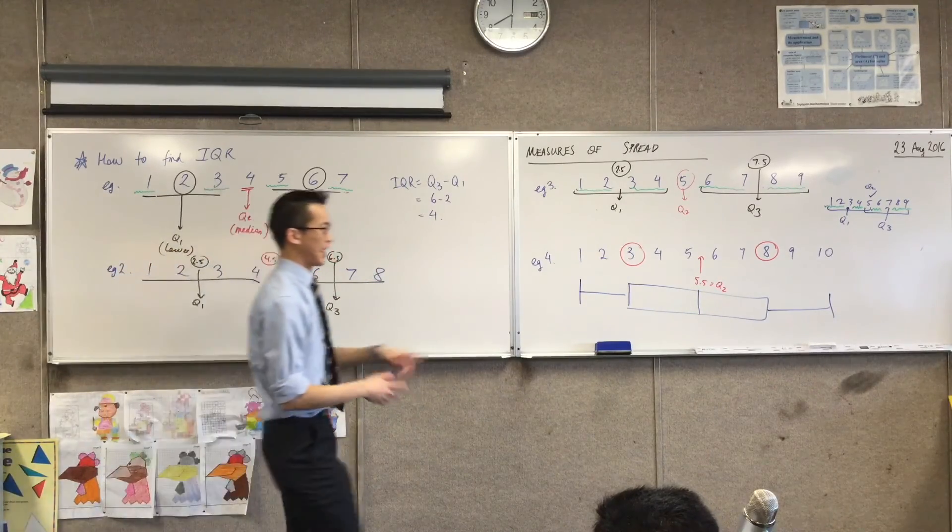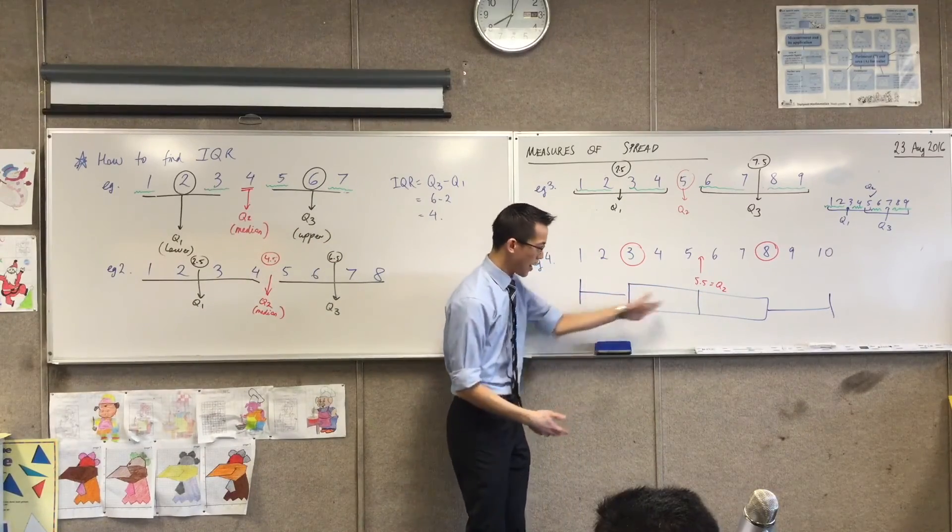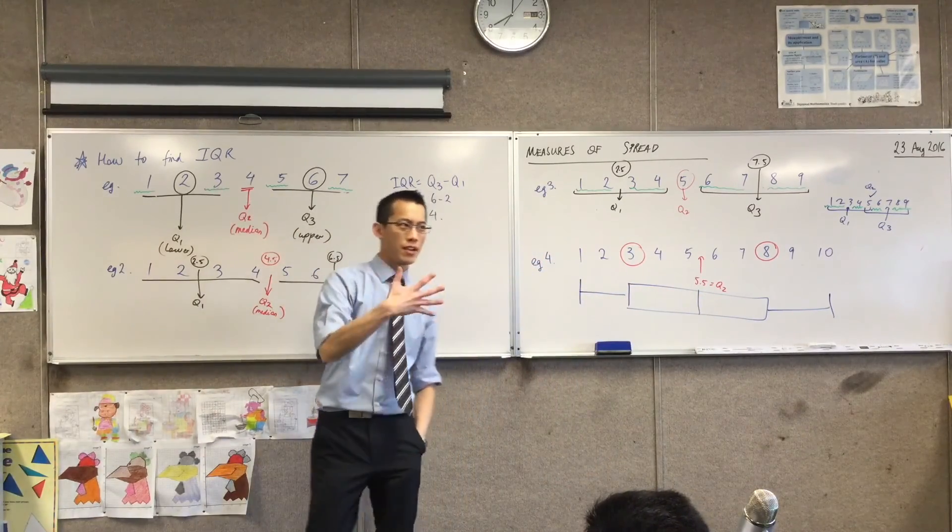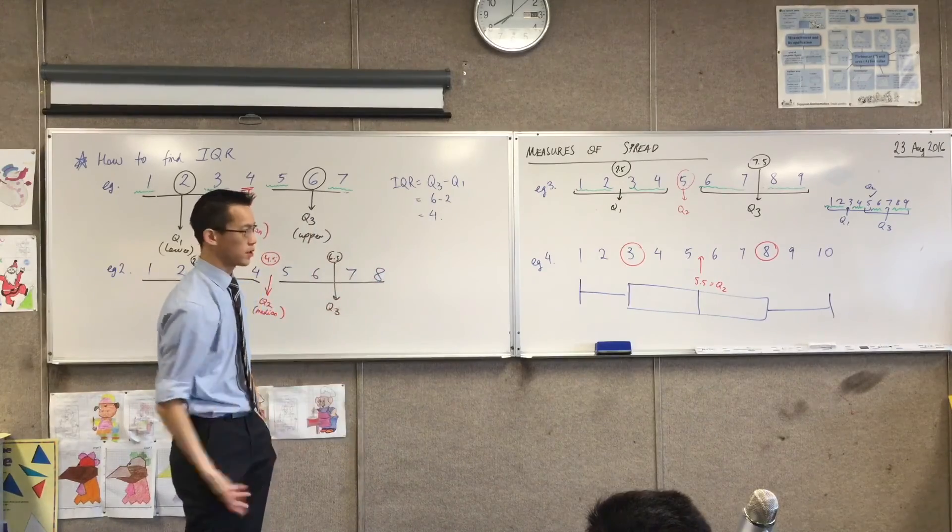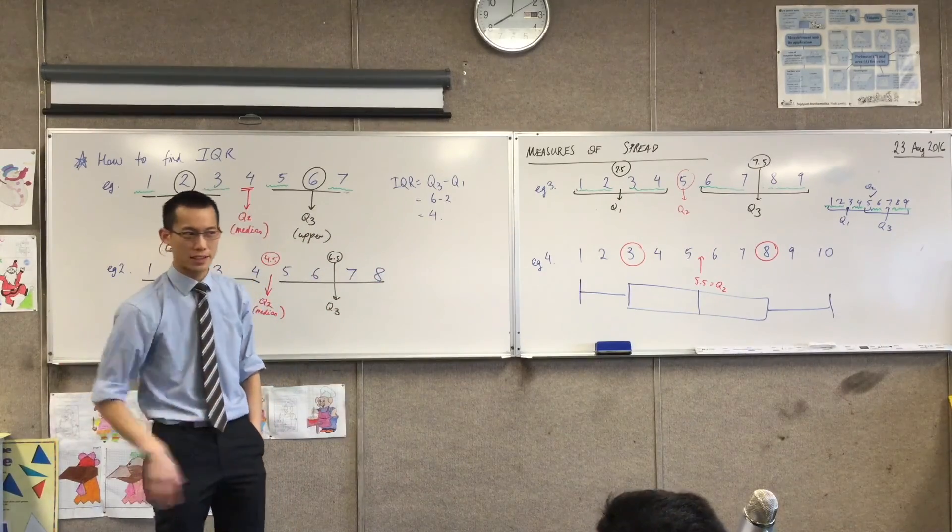Oh, by the way, like these three things here, they're also called, these five numbers, they're called the five number summary or the five point summary of a set of scores. So you'll hear that phrase sometimes, but we'll talk about that tomorrow.